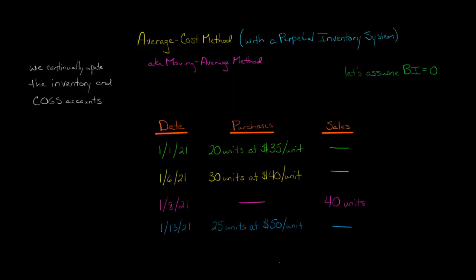In this video, we're going to discuss how to use the average cost method to calculate cost of goods sold and ending inventory for a company that uses the perpetual inventory system.